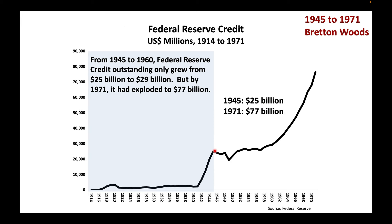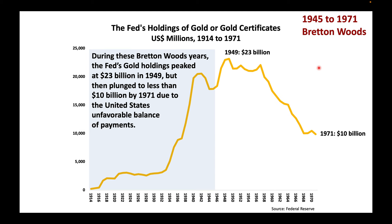From 1945 to 1960, Federal Reserve credit outstanding only grew from $25 billion to $29 billion. But by 1971, it had exploded to $77 billion. During these Bretton Woods years, the Fed's gold holdings peaked at $23 billion in 1949, but then plunged to less than $10 billion by 1971 due to the United States' unfavorable balance of payments.